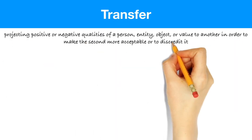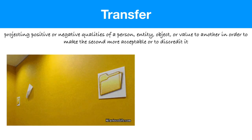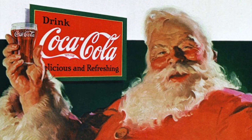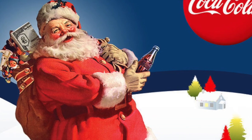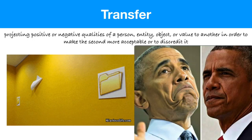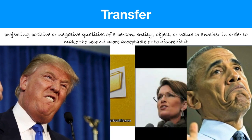The next technique is transfer — also called priming. This is projecting a positive or negative quality onto something else. When we see Santa Claus here with Coca-Cola, we have positive images about Santa Claus bringing us presents, and so we transfer those good feelings over to the product. Politicians do this all the time with the American flag or the Statue of Liberty in the background — we see those things and we think patriot, they love their country. It can work the other way too: a negative picture of Obama or Trump might transfer negative feelings toward them.